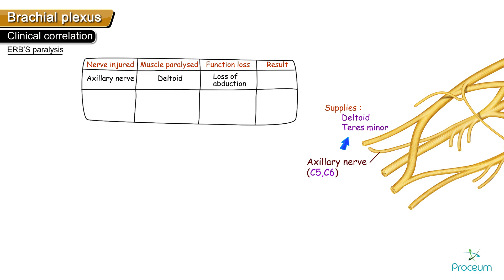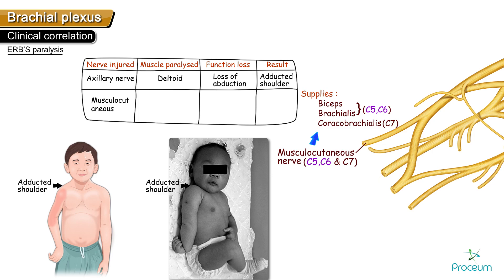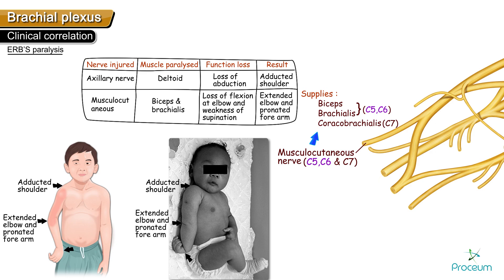The musculocutaneous nerve has a root value of C5, C6, and C7, and supplies biceps, brachialis, and coracobrachialis. Biceps and brachialis are innervated by C5 and C6, whereas coracobrachialis receives innervation from C7. In Erb's paralysis, which involves C5 and C6, coracobrachialis is spared, but biceps and brachialis are affected. Since biceps and brachialis assist in flexion at the elbow and supination, their loss leads to an extended elbow and a pronated forearm.